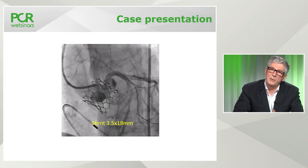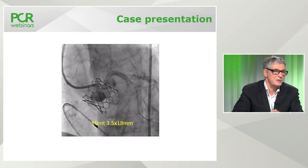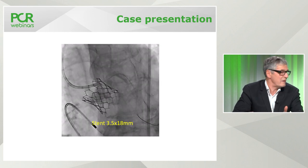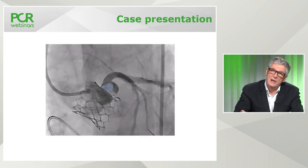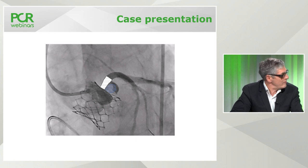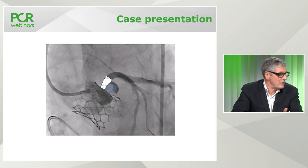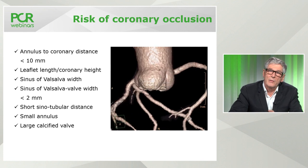This lesion can be clearly seen. It's very important to use cranial views to visualize the ostium of the left main, as it is not clearly seen in conventional views. A 3.5 mm stent was selected, and the animation shows the displacement of the calcification with the stent. The stent was placed not just at the ostium of the left main but also extending into the sinus of Valsalva — placing it only at the ostium would not solve the problem.